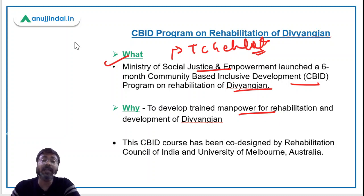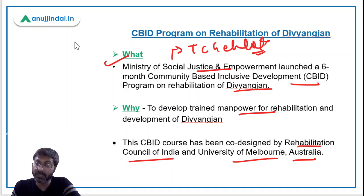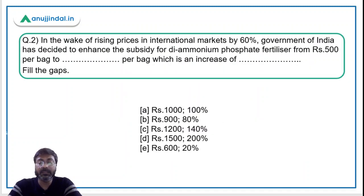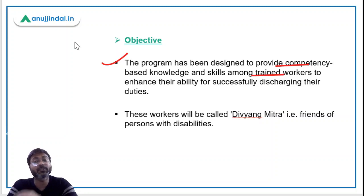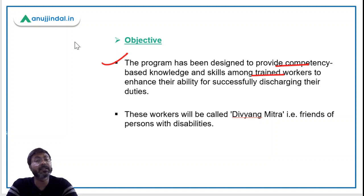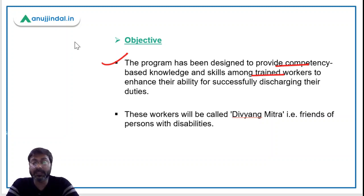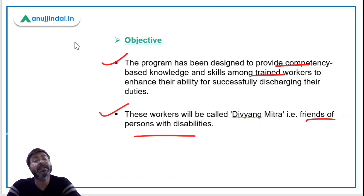This course has been co-designed by the Rehabilitation Council of India and the University of Melbourne from Australia. The objective of this program is to provide competency-based knowledge and skills among trained workers, so that they can discharge their duties successfully. These workers will be known as Divyaang Mitra — or the friends of persons with disabilities.